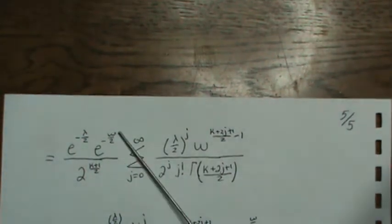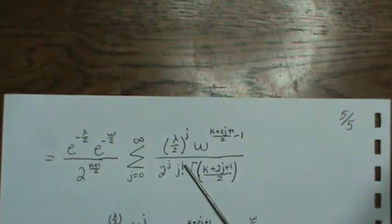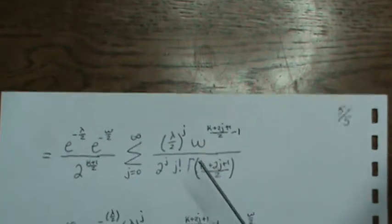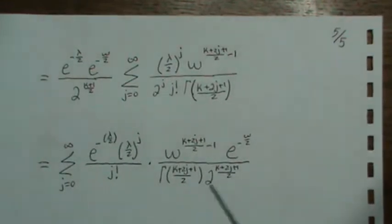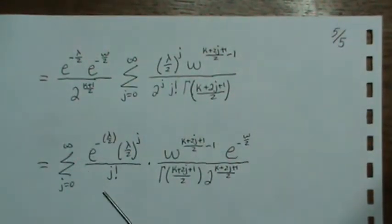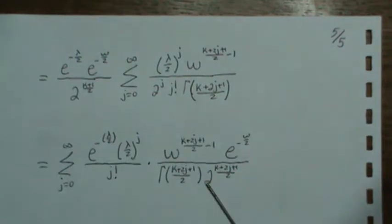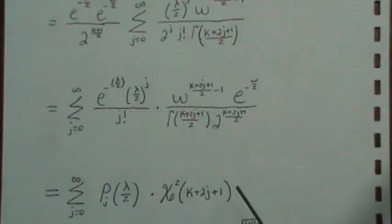And now the next step I want to bring these in here in a very unique way. And we're going to write it in this fashion here. Where this looks like a Poisson and this is a central chi-square distribution.